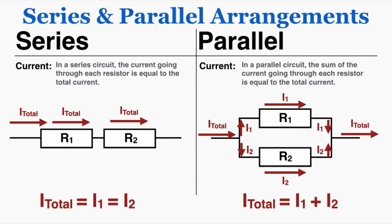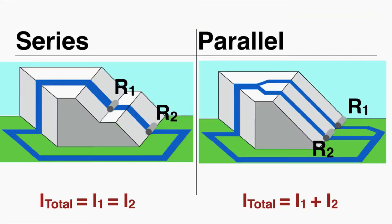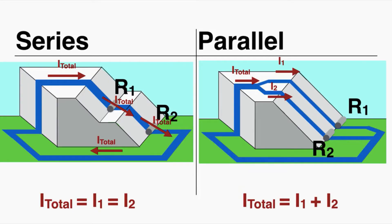The total current is equal to the first current plus the second. This makes sense with the water analogy — the two resistors are arranged in series on the left and parallel on the right. In the series arrangement, the total amount of water has to travel through both resistors. In the parallel circuit, the current splits into two smaller currents, goes through each resistor, and then comes back together. That's why those two current rules work for series and parallel.